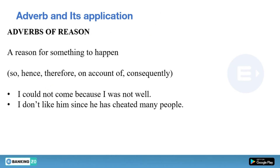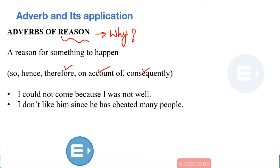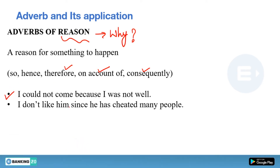We have one more type — adverb of reason. Whenever there is a reason, it gives you the answer of 'why.' Words like hence, therefore, on account of, and consequently are adverbs of reason. Example: I could not come because I was not well — 'because' gives the answer of why. Another: I do not like him since he has cheated many people — 'since' gives the answer of why.